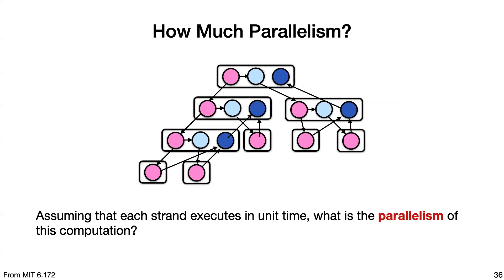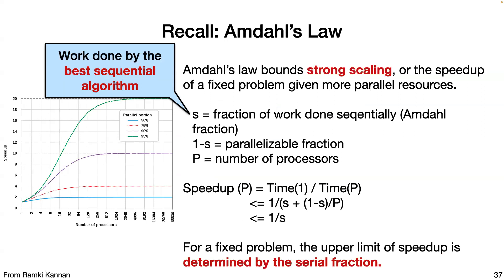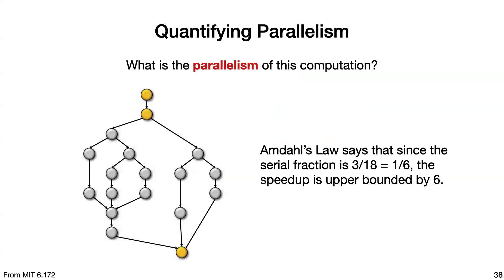Assuming each strand takes order-one time, we want to quantify the parallelism of this computation — meaning the capability of your program to scale. Previously, we had Amdahl's law, which gives strong scaling: how much speedup you can get given more cores. Amdahl's law tells us the speedup in terms of p processors is bounded by one over the serial fraction, which is the fraction of your program that is not parallel. In this computation DAG example, there are 18 total nodes and 3 serial nodes, so the serial fraction is 3/18 = 1/6, meaning speedup is upper bounded by 6.